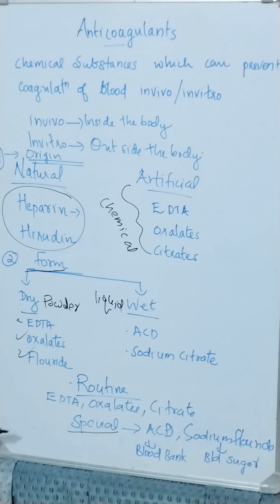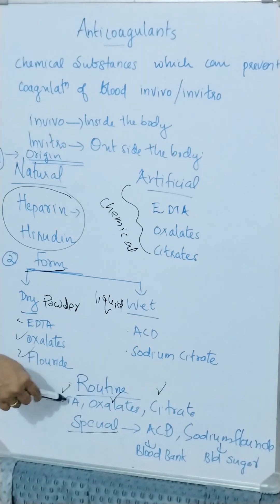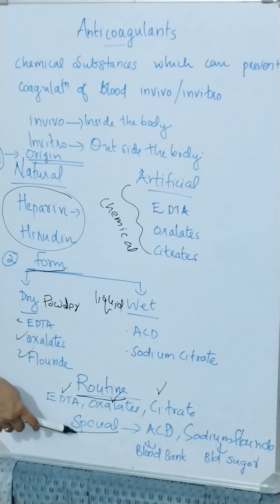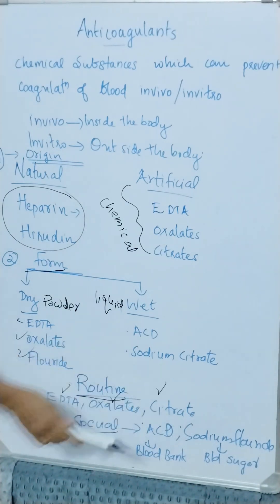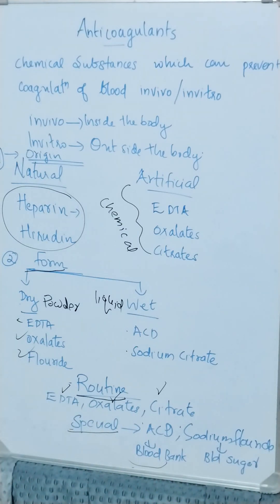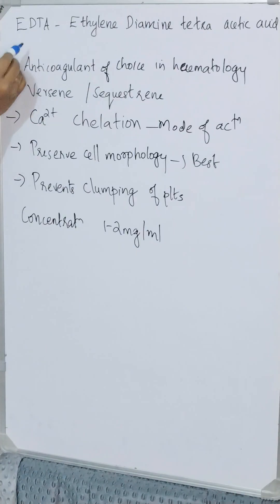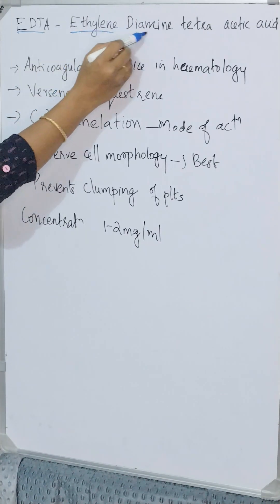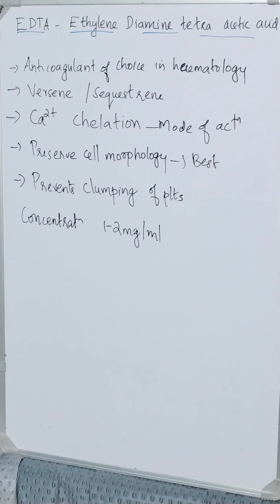Routine anticoagulants include EDTA, oxalates, and citrates. Special purpose anticoagulants are ACD and sodium fluoride. ACD is used in blood banks, and sodium fluoride is used for blood sugar estimation.